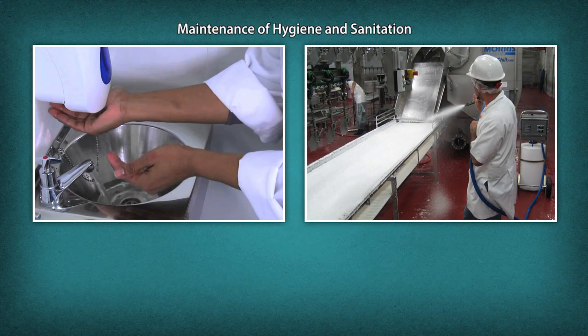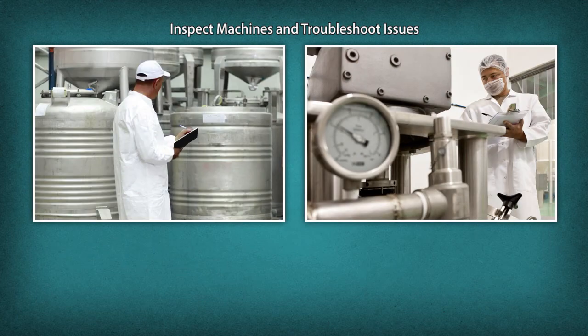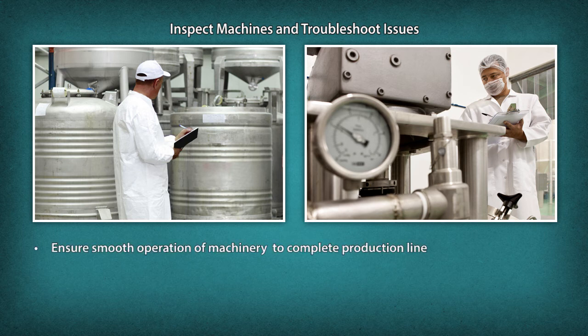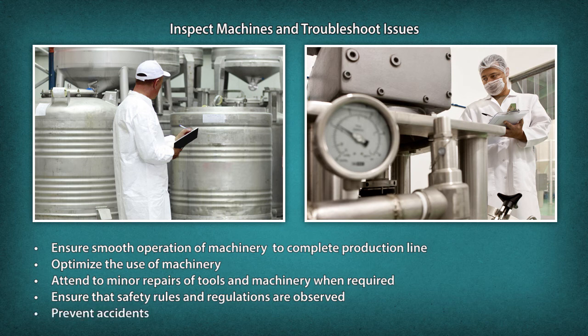Maintenance of hygiene and sanitation: adopt safety and sanitation related measures and follow food safety norms and practices. Inspect machines and troubleshoot issues; ensure smooth operation of machinery to complete the production line; optimize the use of machinery; attend to minor repairs of tools and machinery when required. Ensure that safety rules and regulations are observed and prevent accidents.